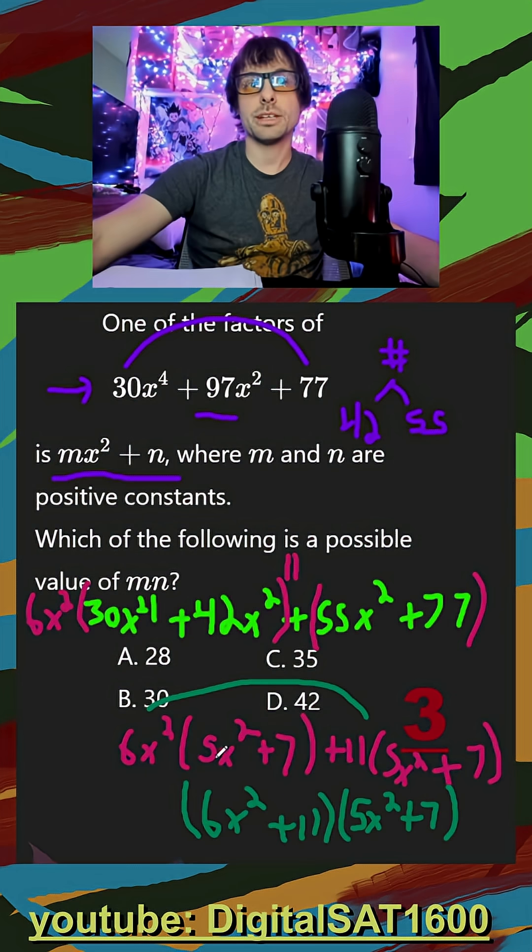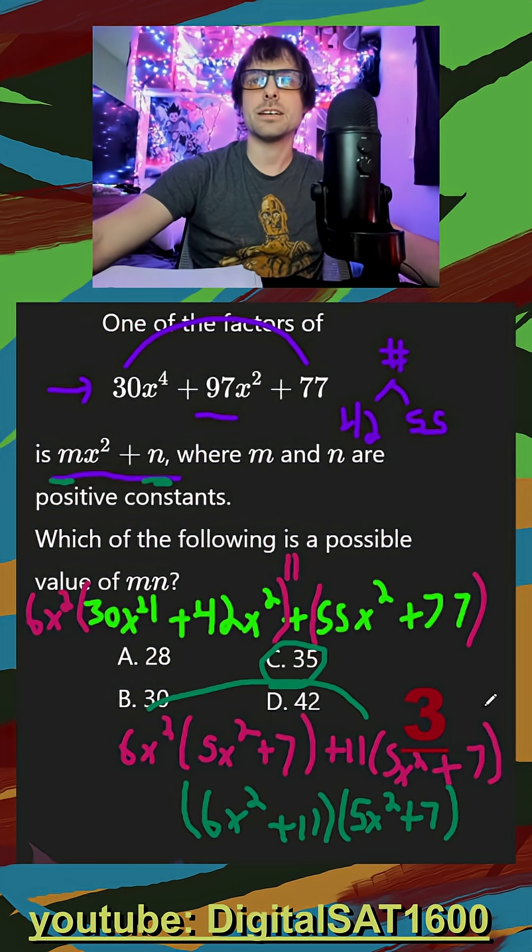My only possible multiplication is 6 times 11, because they want m and n. 6 times 11 would get me 66, not a possible answer. 5 times 7 gets me 35. It looks like it's going to be C here.